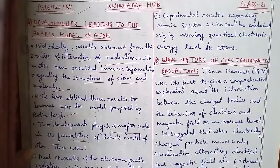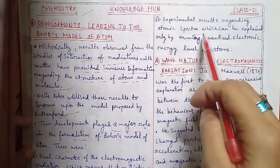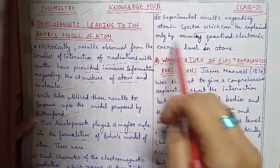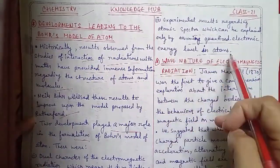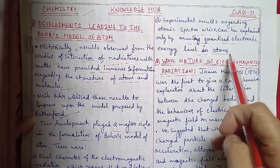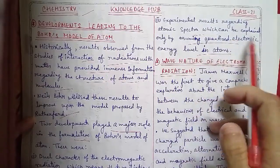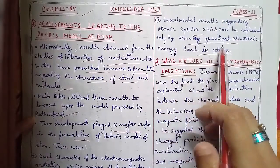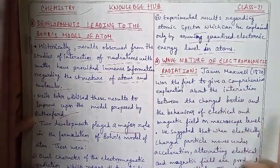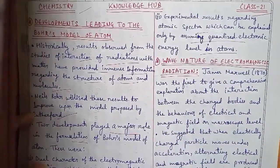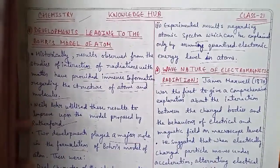The second important point is the experimental results regarding atomic spectra, which can be explained only by assuming quantized electronic energy levels in atoms. To explain the experimental results regarding atomic spectra, quantized electronic energy levels in atoms were assumed. Please note this down because it is important.